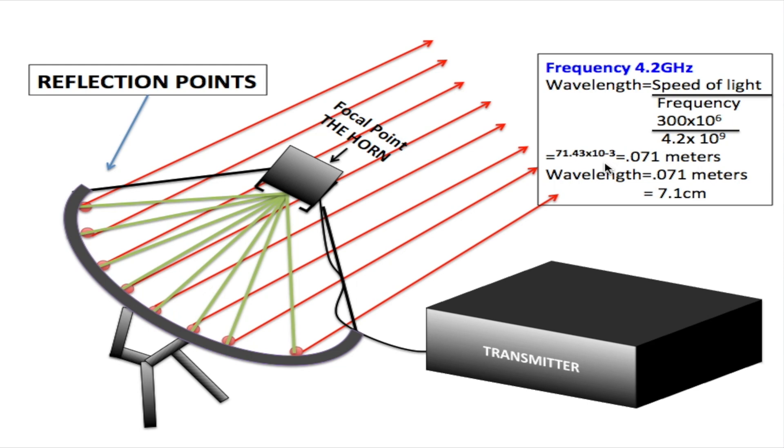I got 71.43 times 10 to the negative 3, which is equal to 0.071 meters. I got 0.071 by moving my decimal point from right between the 1 and the 4 over three places to the left because I got 10 to the negative 3. So I have 0.071 meters.